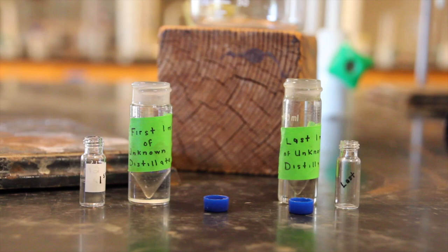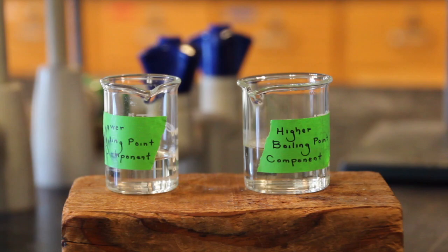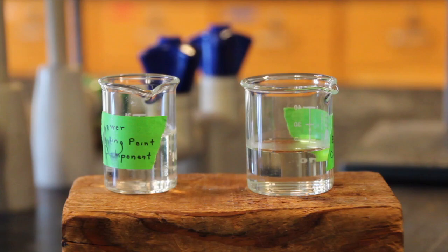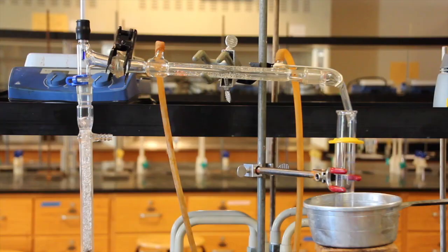For identification purposes, your group should obtain a GC for the first small sample and the last small sample obtained in the conical vials during a fractional distillation. In addition, you may also want to determine the water solubility of your fractions as further evidence in the unknown identification.